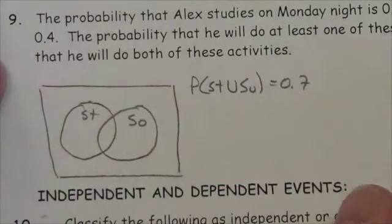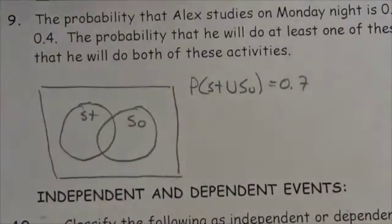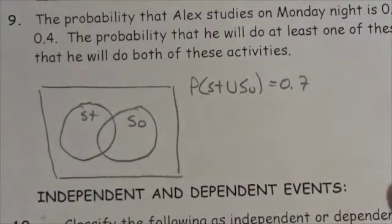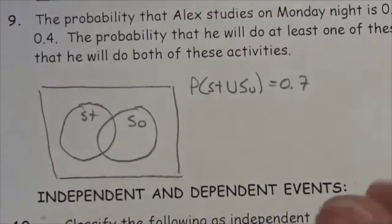We want to know the probability that he will do both of these activities. Okay, well let's take a quick look here. It should be clear that these are not going to be mutually exclusive events, so there should be some overlap between the two of them here.